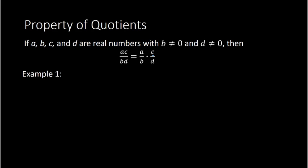For example, let's say we had 14 over 21. Well, 14 I can think of as 2 times 7, and 21 would be 3 times 7. So this property of quotients says that when you have this type of setup, where on the top and bottom both you have multiplication, you can break apart the fraction as two different fractions: 2 over 3 times 7 over 7. And that's important because 7 over 7 is just 1, so we have 2 thirds times 1, which is 2 thirds.